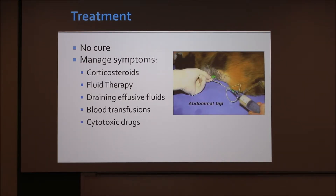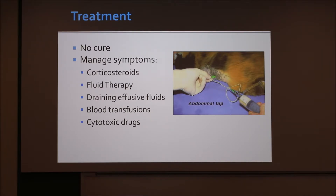Treatment-wise, there is no cure for FIP. You just have to manage the symptoms and provide supportive care for your cat. This can be done with corticosteroids, fluid therapy, draining the effusive fluids — like this picture here — blood transfusions, and cytotoxic drugs like those used for cancer. With our patient, we did supportive care by routinely draining the fluids built up in his abdomen. We were also going to start cytotoxic drugs, but before they arrived at the clinic, he was too far gone and we had to euthanize.